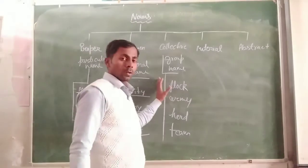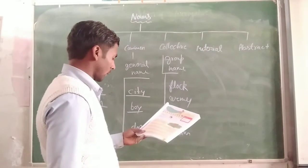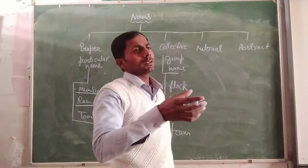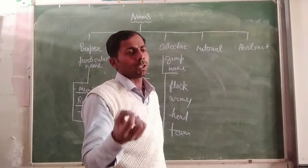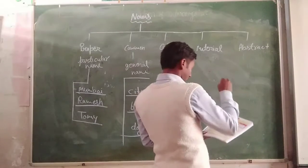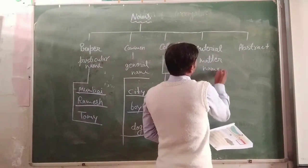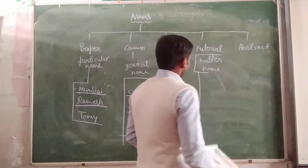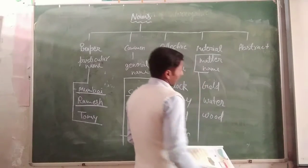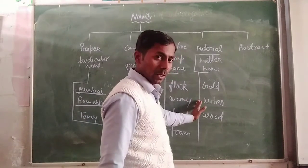I hope you understand all three parts of the noun. Next is material noun. Material noun is the name of the substance or material from which a thing is made — it is called material noun. It means when we get some things from nature and we keep its name, it is material noun. Like gold, water, wood — all these words are the material that we get from nature.